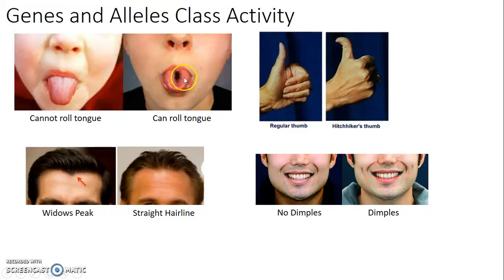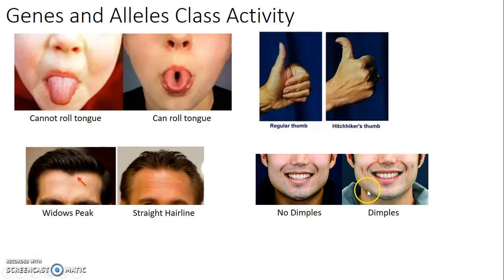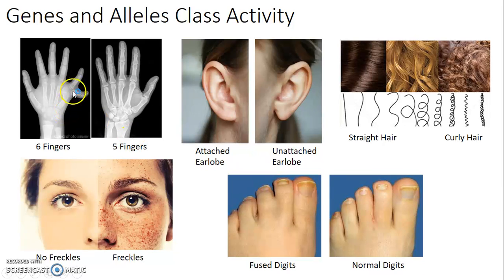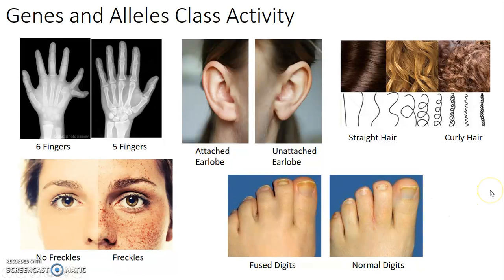Examples of traits to observe: tongue rolling — someone who can roll their tongue versus someone who just sticks it out flat. Hitchhiker's thumb — bent over versus straight. A widow's peak — the pointed hairline versus a straight hairline. Dimples in the cheeks. Attached versus unattached earlobes. Straight versus curly hair. Freckles versus no freckles. And fused digits — webbed fingers or toes versus normal digits. Go around and record at least 10 classmates' traits.